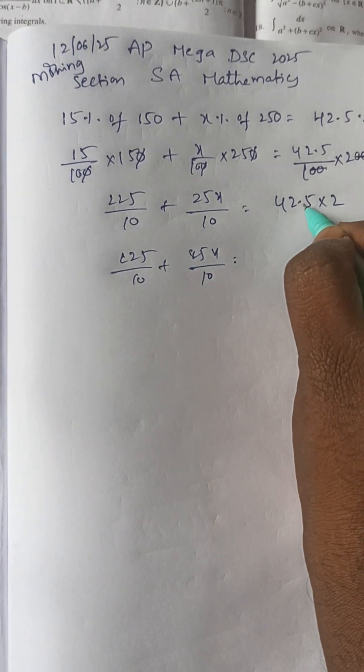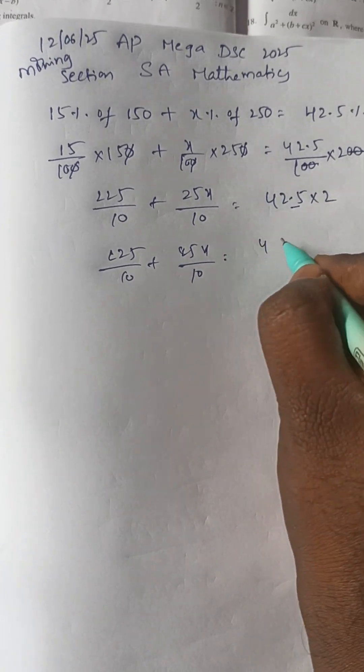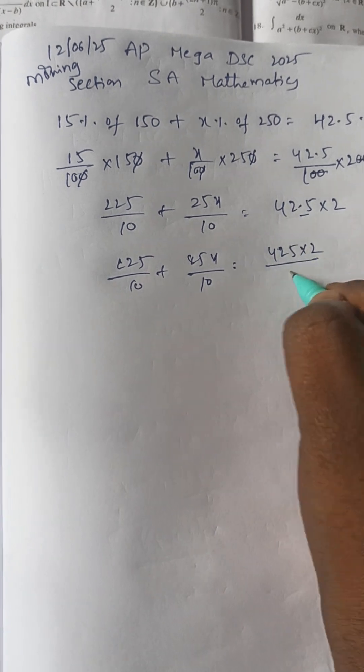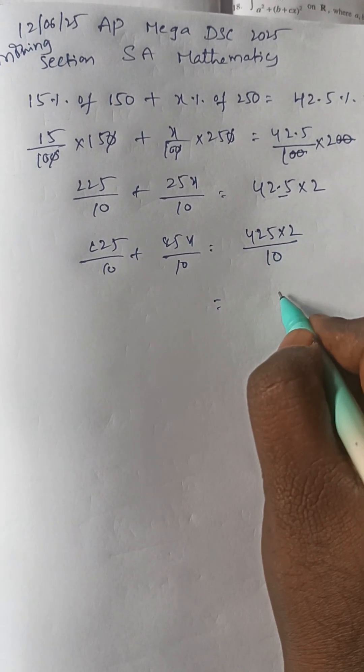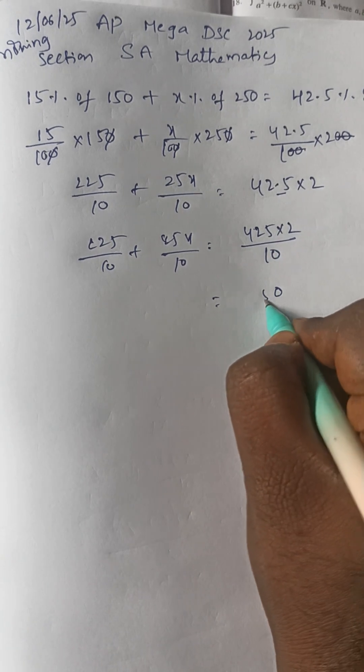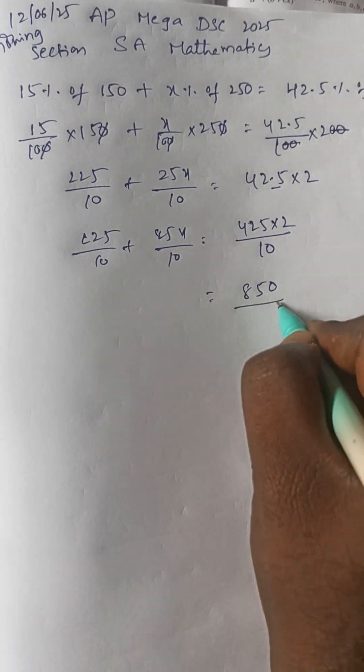After the decimal point, how many decimals? One decimal. We can write as 425 into 2 by 10, so 425 by 2. Then 2 times 5 is 10, 2 times 2 is 4 plus 1 is 5, 2 times 4 is 8. So 850 by 10.